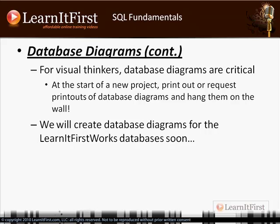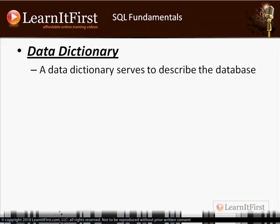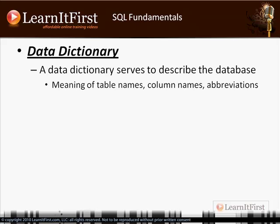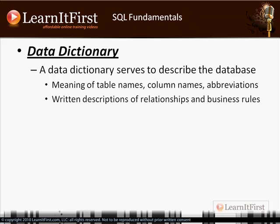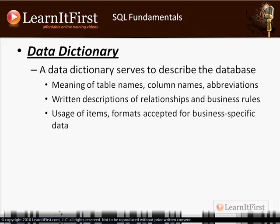Now let's talk about a data dictionary. The data dictionary serves the purpose of describing the database. It covers things like: what do the table names mean, what are the abbreviations, what does a column name mean and what's its purpose, why does this relationship exist? Your data dictionary is the documentation for the how and the why of a database — for example, why you always have to enter data in a specific format in a table should be listed in the data dictionary.